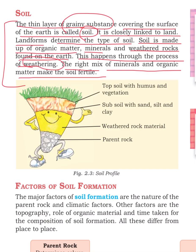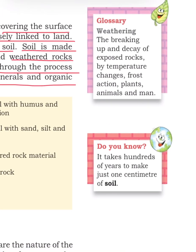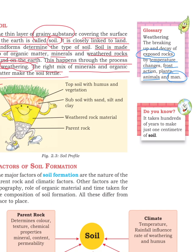Soil profile can be a very important raw material provider. Now, what is the meaning of weathering? Weathering means that on the surface of exposed rock, it disintegrates, decays, by the process of temperature changes, frost action, plants, animals, and the activities of humans. The result is termed as soil.